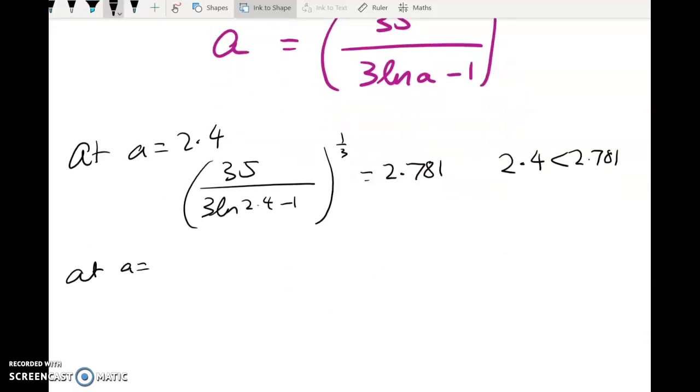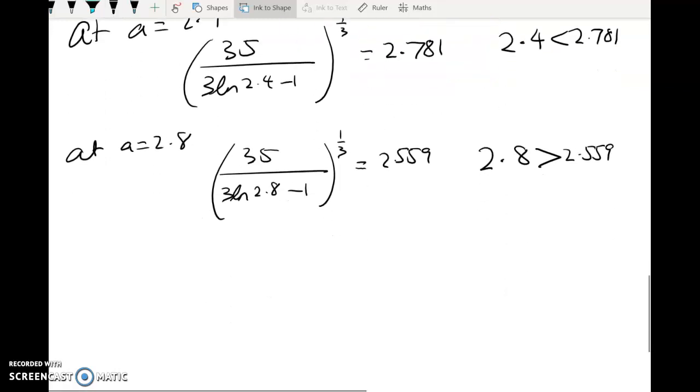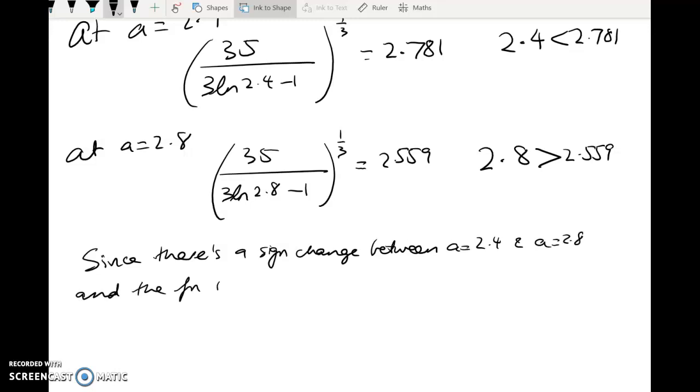Now, doing it again, at A of 2.8, we get 35 over 3 log of 2.8 minus 1 to the power of 1 third is equal to 2.559. So here we've got 2.8 is greater than 2.559. And we need to write something out. I could have typed it out nicely, but you won't have that luxury, so neither do I. So since there's a sign change between A equals 2.4 and A equals 2.8, and the function is continuous, the root or a root, not the only one, maybe the only one here, is between these two values.